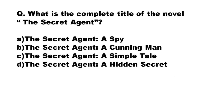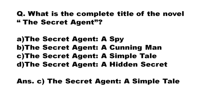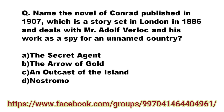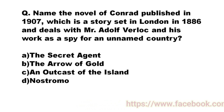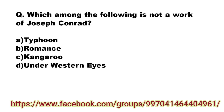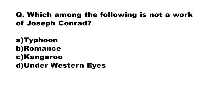Our next question: what is the complete title of the novel The Secret Agent? The options are: A) The Secret Agent: A Spy, B) The Secret Agent: A Cunning Man, C) The Secret Agent: A Simple Tale, D) The Secret Agent: A Hidden Secret. The correct answer is option C: The Secret Agent: A Simple Tale. This novel was published in 1907, is set in London in 1886, and deals with Mr. Adolph Verloc and his work as a spy for an unnamed country.